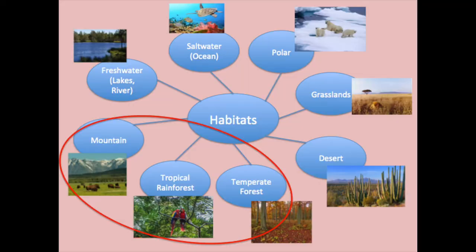Hello! Today we are going to continue talking about habitats and biodiversity. So a quick reminder: habitats are places where plants and animals live — they provide food, protection, and a place to raise their young. Biodiversity is the measurement of the number of different plants and animals that live in an area. In this video, we will look at tropical rainforests, temperate forests, and mountains.